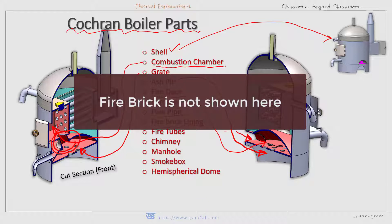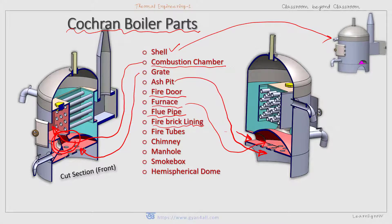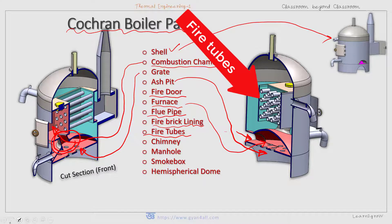Then fire brick. There is fire brick lining around the combustion chamber to minimize the leakage or loss of heat to the atmosphere. Then the fire tube — this is a very important component. These are the horizontal fire tubes connecting the combustion chamber and the smoke box. The fire tubes help in the exchange of heat from the hot flue gases to the water surrounding them. The hot flue gases from the combustion chamber travel to the smoke box through these fire tubes.